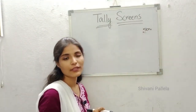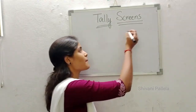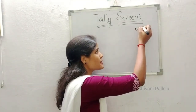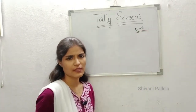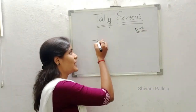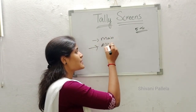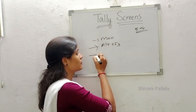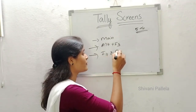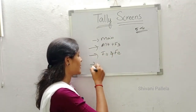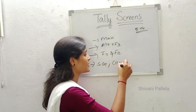In this video we will discuss about the screens. In Tally, you have approximately five to six screens which you need to remember only. What are those? The main menu screen, Alt+F3 screen, ledger and F2 configuration screen, stock group screen, and company creation screen.